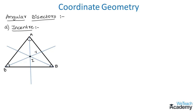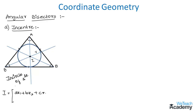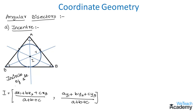The circle drawn with I as center and r as radius touches all three sides of the triangle internally, and this circle is called the incircle of the triangle. The formula to find the incenter is: I = ((a·x1 + b·x2 + c·x3)/(a + b + c), (a·y1 + b·y2 + c·y3)/(a + b + c)), where x1, x2, x3 and y1, y2, y3 are the coordinates of the vertices and a, b, c are the side lengths of the triangle.